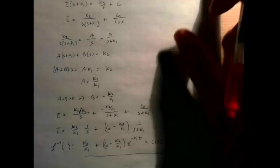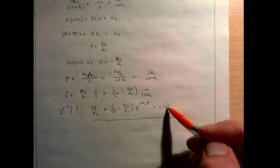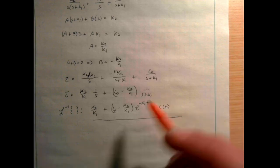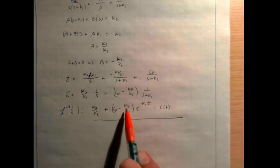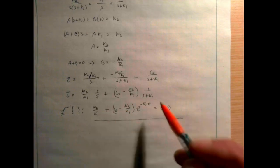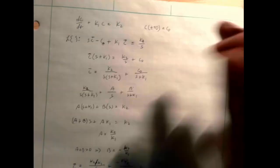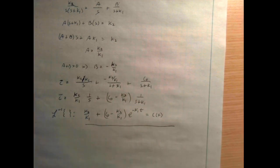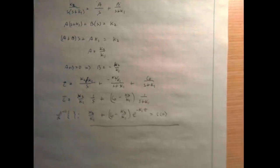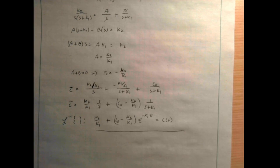We can verify this works: at t=0, e^0 = 1, so the K2/K1 terms cancel and we get C0 — which is correct. If you take the derivative and add K1 times the whole expression, it should give K2. The idea when solving a differential equation is to arrive at an explicit formula we can use, and this satisfies the original ODE. In the next video, I'll introduce additional complexity and discuss environmental engineering applications.